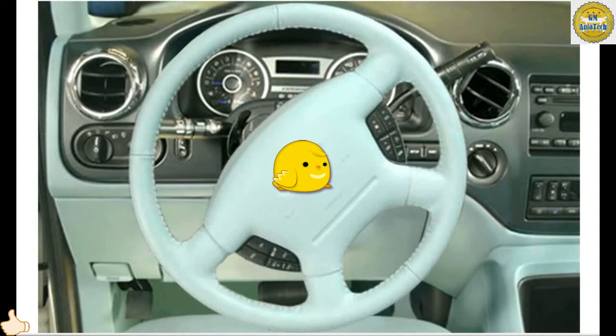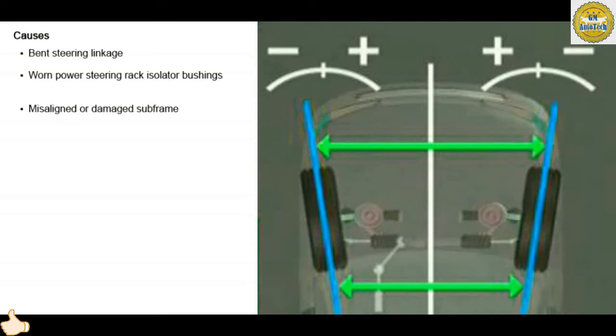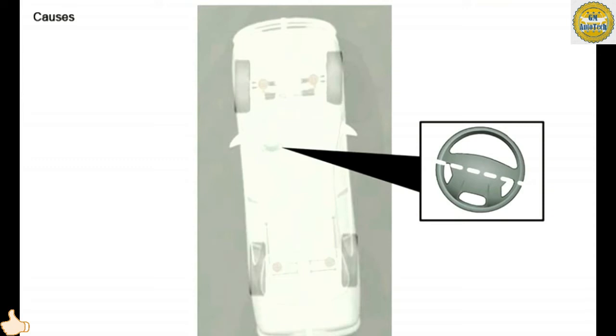Sometimes, an off-center steering wheel is simply the result of misadjusted front toe. Other causes may include bent steering linkage, worn power steering rack isolator bushings, or a misaligned or damaged subframe. If the thrust angle is out of specification, the driver has to turn the steering wheel so that the direction of the front wheels matches the direction of the rear wheels, resulting in an off-center steering wheel. This is also commonly referred to as dog tracking. Some causes of an out-of-specification rear thrust angle include a bent frame, misadjusted rear toe, or bent or damaged rear suspension components.